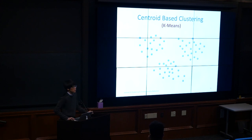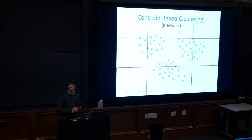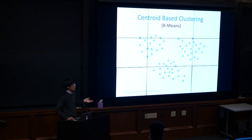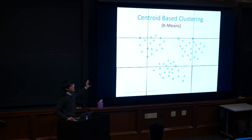Let's talk about K-means clustering, probably the most naive method — also called naive K-means. Given a dataset conveniently clustered into three groups, the first step is to randomly assign all data points to K clusters. We'll assume K equals three because some oracle told us that's the right number.